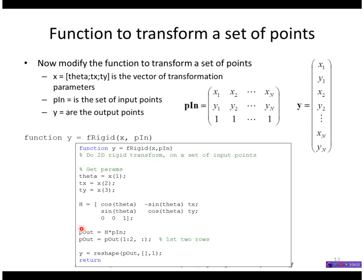I do the same thing, then H multiplied by that matrix generates, it transforms each of the points and generates a 3 by n output matrix. So I just want the first two rows.